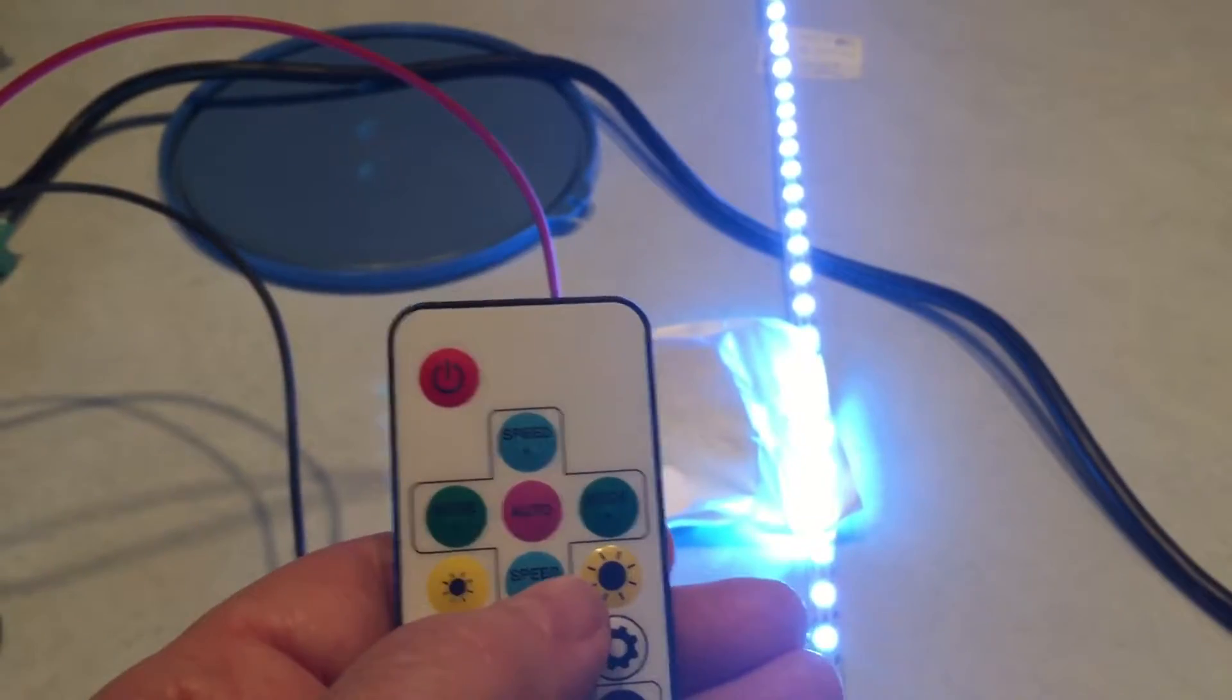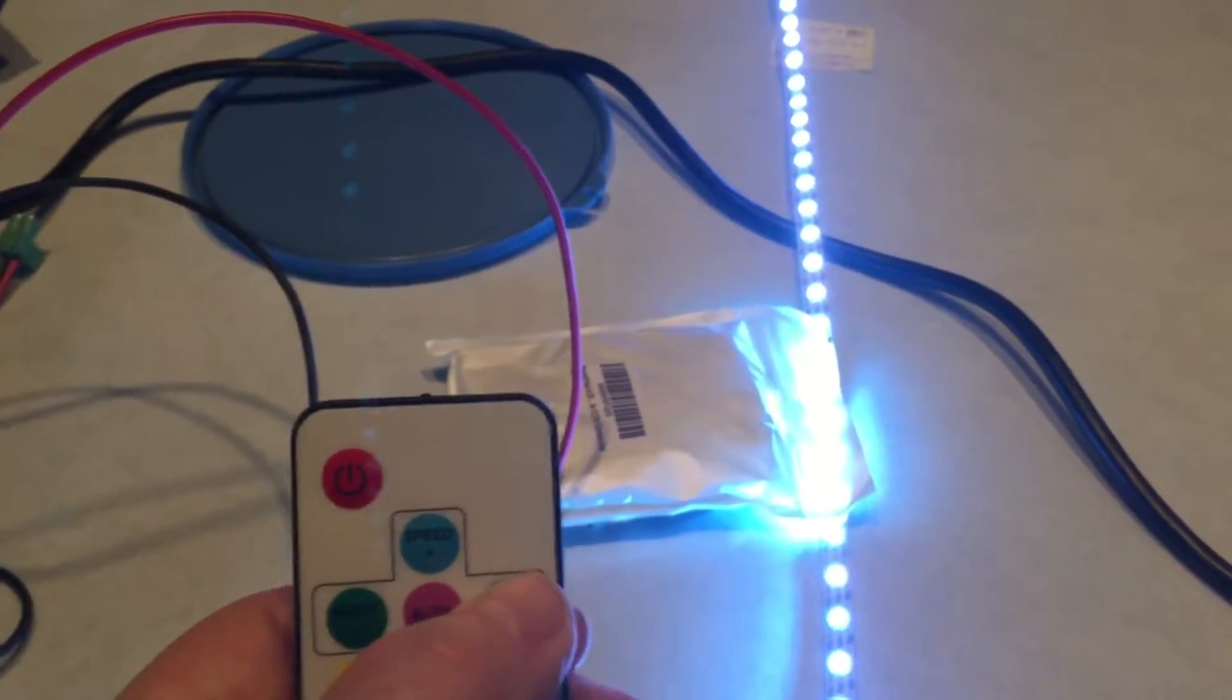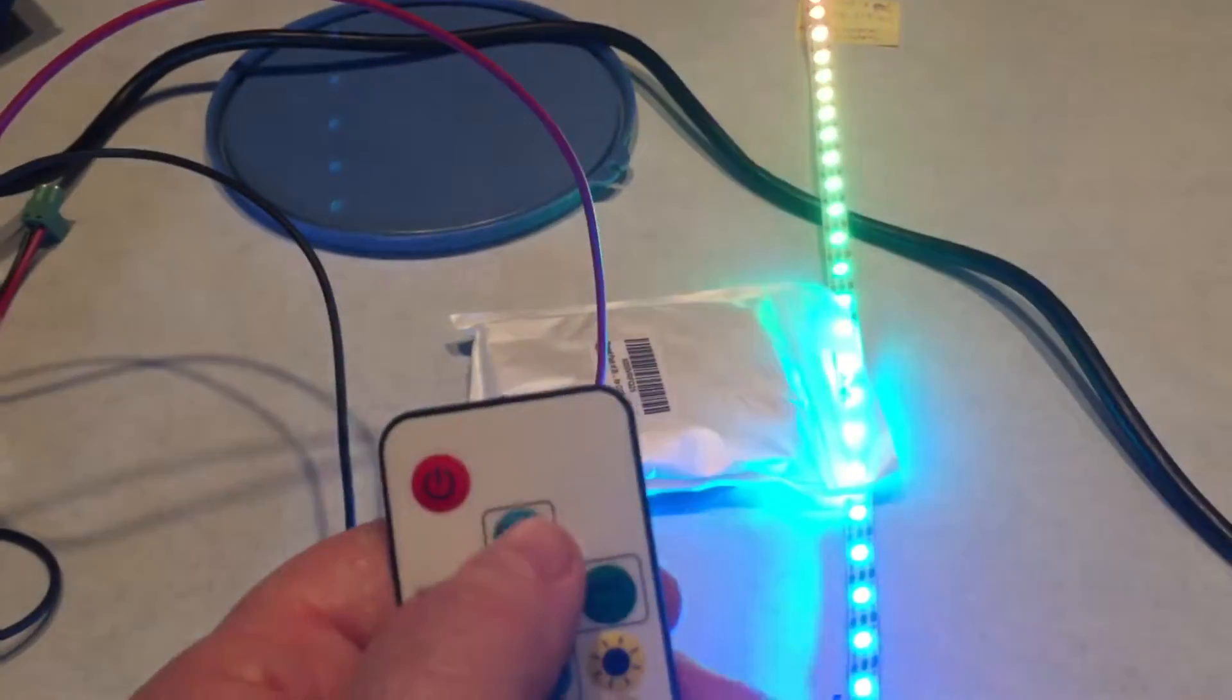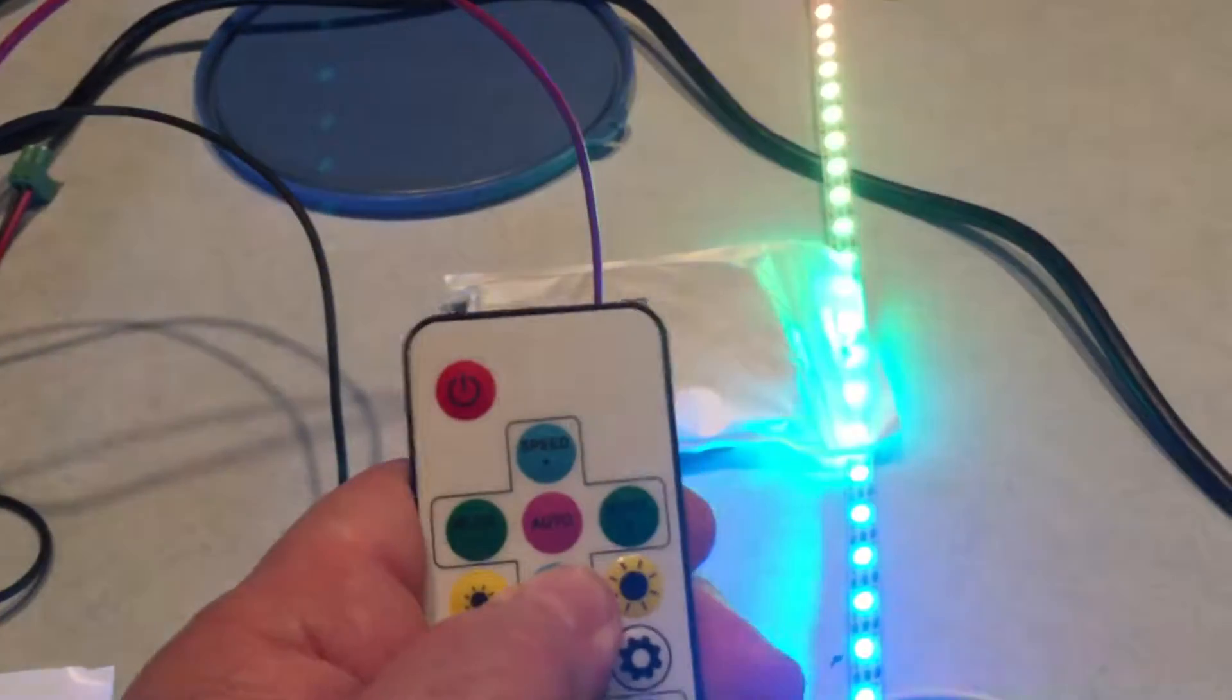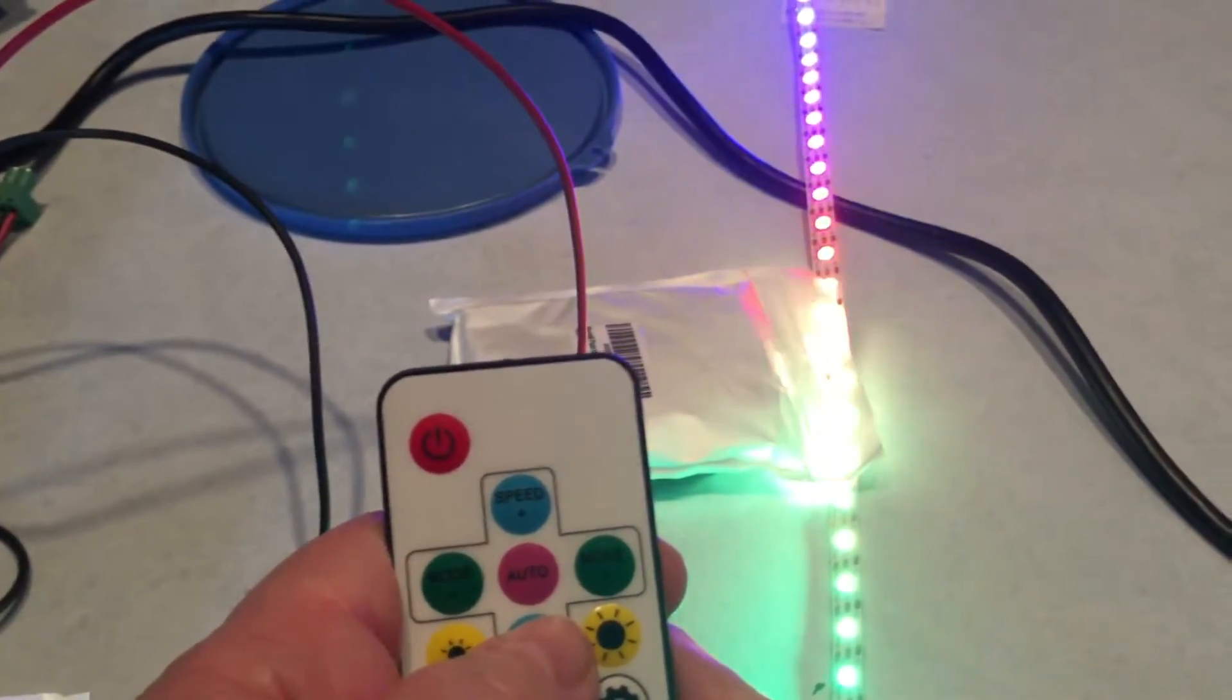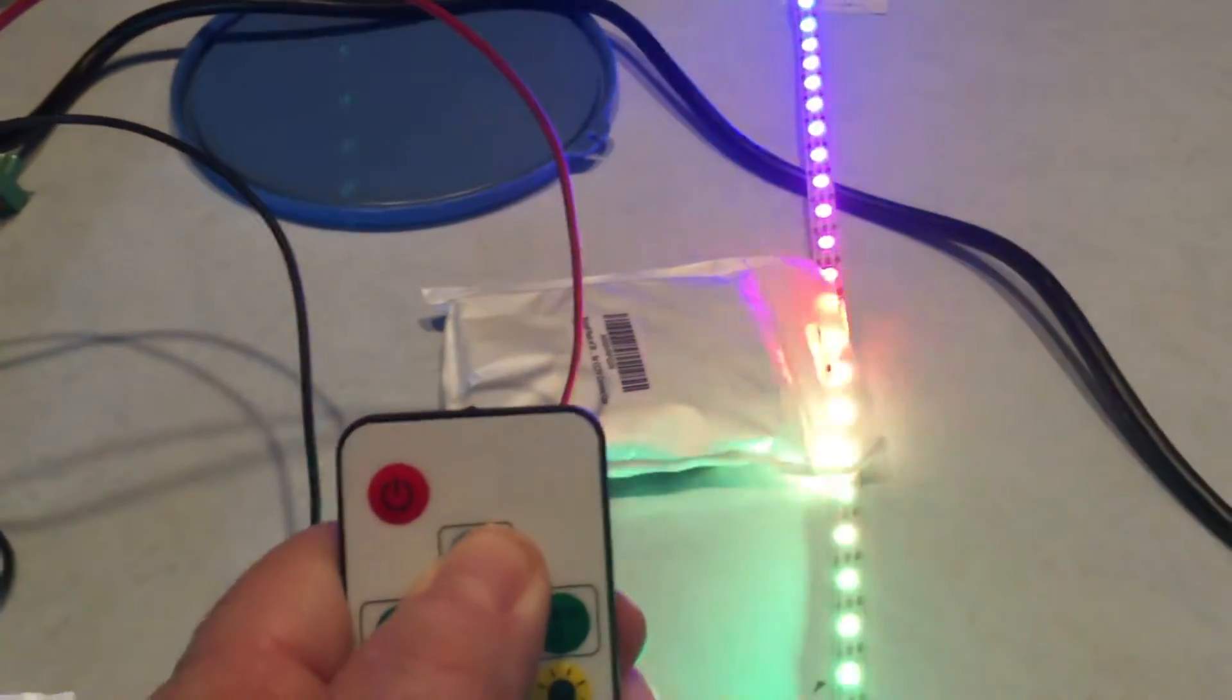You can change the speed of the pattern if you want to. If you go back to here, you know, you can slow it down. It's going very slowly now. Let's speed it up. Back to auto and shut it off.